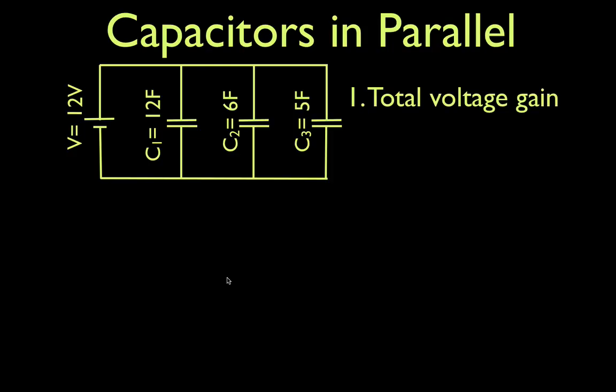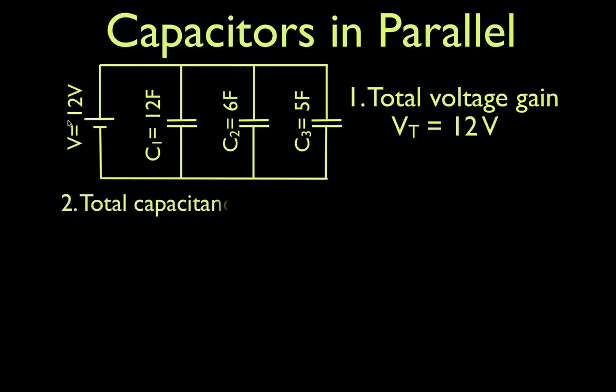The total voltage gain — that should be relatively straightforward. We have one battery, a 12-volt battery, so the total voltage is simply 12 volts.